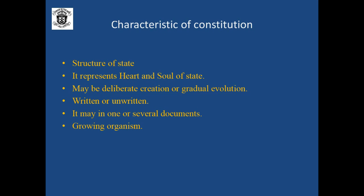That's why it has been called as the heart and soul of the state. Another characteristic of the constitution is that it may be a deliberate creation or a gradual evolution. The constitution may be created purposefully — in the case of India, the constitution was created purposefully by the constituent assembly and drafting committee. For gradual evolution, the best example is England's constitution, which was not created by any constituent assembly or drafting committee. The convention and tradition of the country later became rules and were included into the constitution. So England's constitution is the best example of gradual evolution.